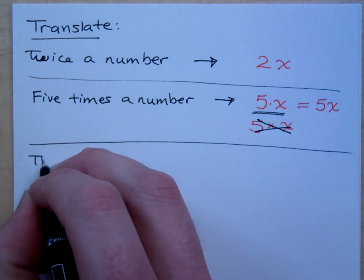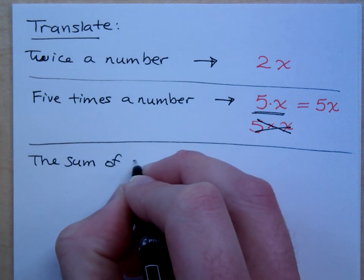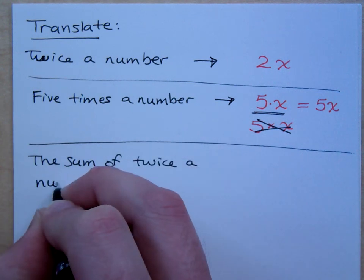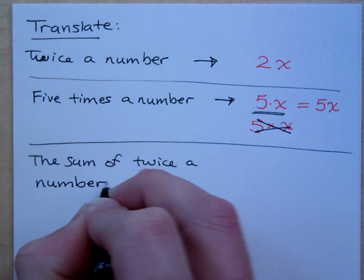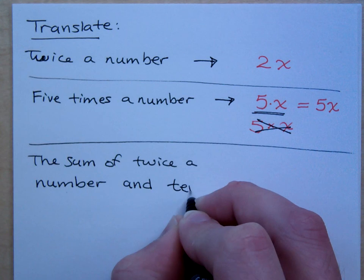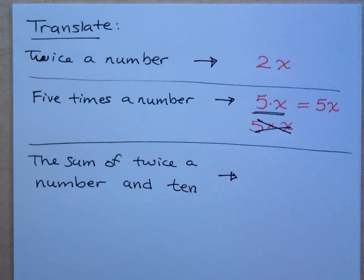What if I say this? The sum of twice the number and ten. As I read this, what's the first math word that I see? I see sum, which means I'm doing what? Addition.